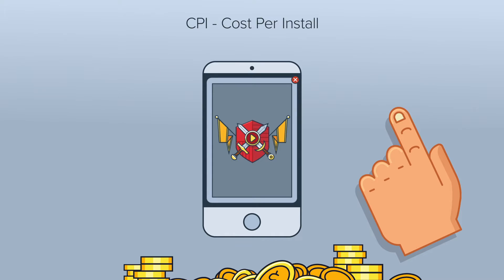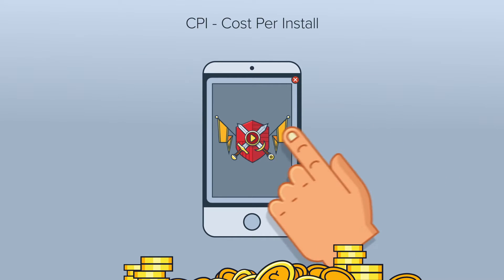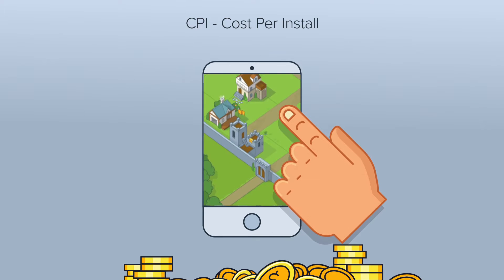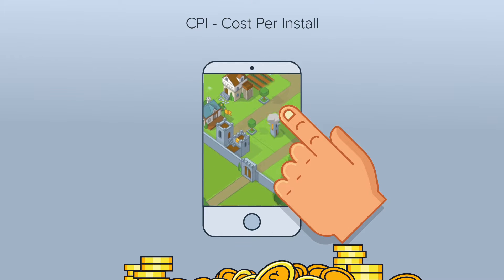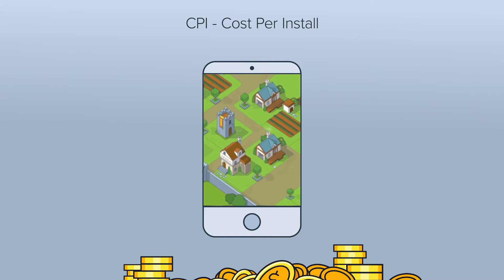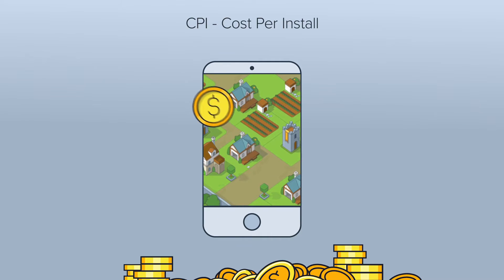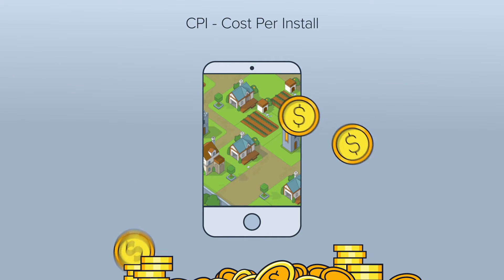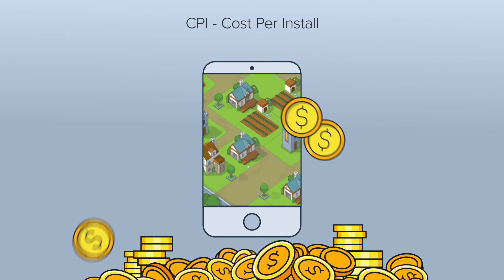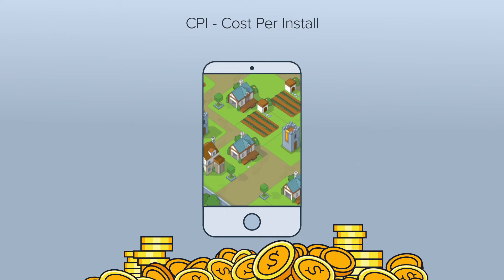CPI stands for Cost Per Install. Once a user clicks on an ad within your game, they're taken to the App Store. Here, they're able to install the advertised app onto their device. After booting up the advertised app, you earn revenue. We require the app to be launched within a specific window.